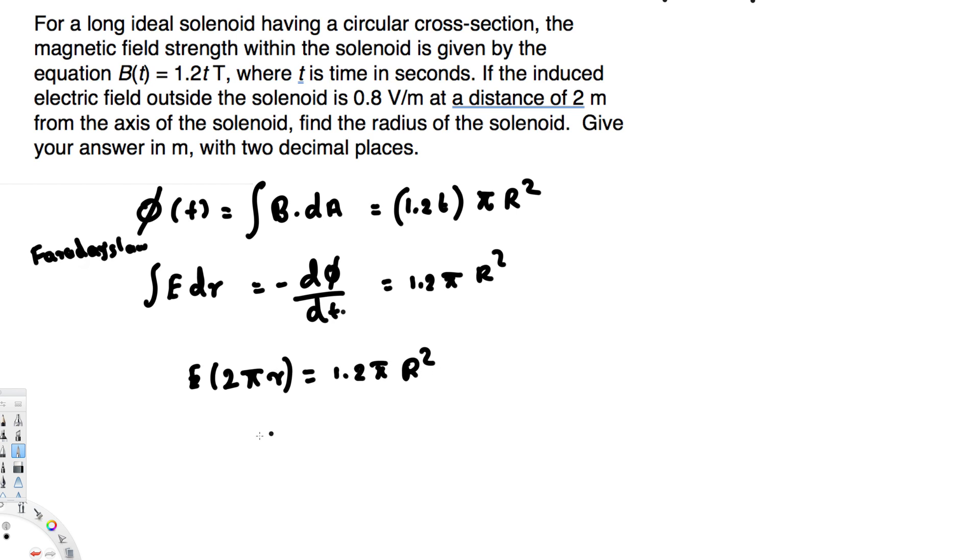Now let's go ahead and rearrange this equation. We are trying to find this capital R. That's going to be equivalent to E times 2πr. We can cancel this π, so this is going to be just E times 2r divided by 1.2. Since we have square, we are going to square root this one.